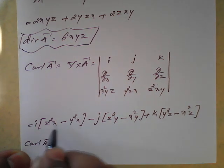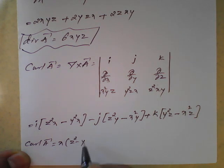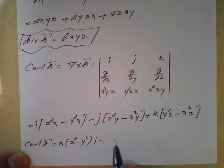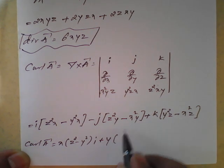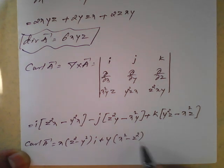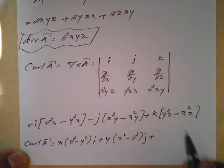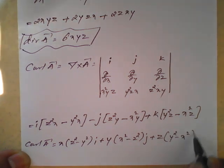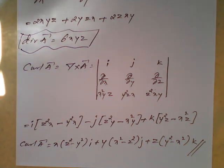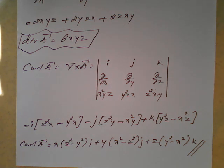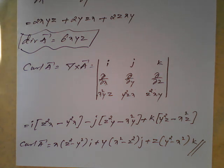Curl of vector A equals x(z squared minus y squared) of i, minus y(x squared minus z squared) of j, plus z(y squared minus x squared) of k. This is the way to find gradient, divergence, and curl. Remember how gradient works for a scalar quantity, how to find divergence of any vector quantity, and curl of any vector quantity. With the help of these illustrated examples, we will go for the actual examples which are very important for our examinations. Thank you.